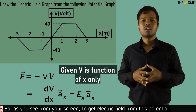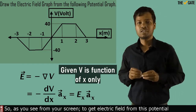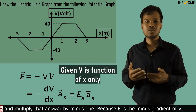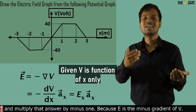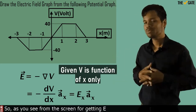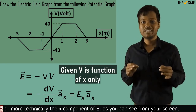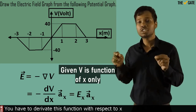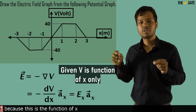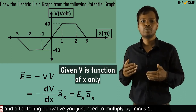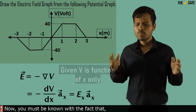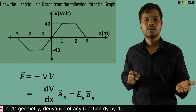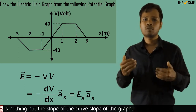As you can see from the screen, to get the electric field from this potential, you just need to differentiate this potential function and multiply that answer by minus 1, because E is the minus gradient of V. So, to get E — or more technically, the x component of E — you have to differentiate this function with respect to x, and after taking the derivative, multiply by minus 1. In 2D geometry, the derivative dy/dx is nothing but the slope of the curve, the slope of the graph.